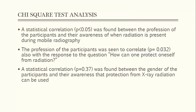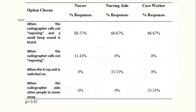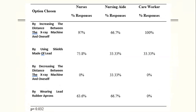Regarding the correlations found, the chi-square test was used and three correlations were found: between the profession of the participants and their awareness of when radiation is present; between the profession of the participants and the response to the question of how one can protect oneself from radiation; and between the gender of the participants and their awareness that protection from radiation is possible. Regarding the third correlation, 15% of male participants responded incorrectly, whilst all of the females chose the correct answer. Additionally, 32% of the nursing aides chose the incorrect answer, creating a further correlation.